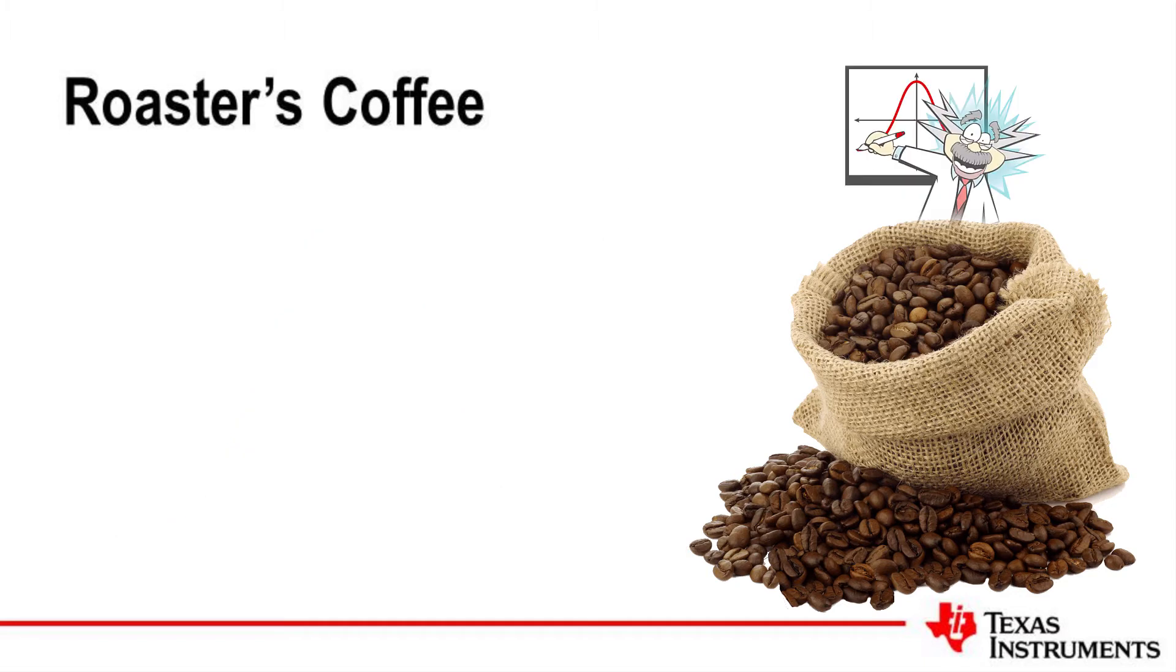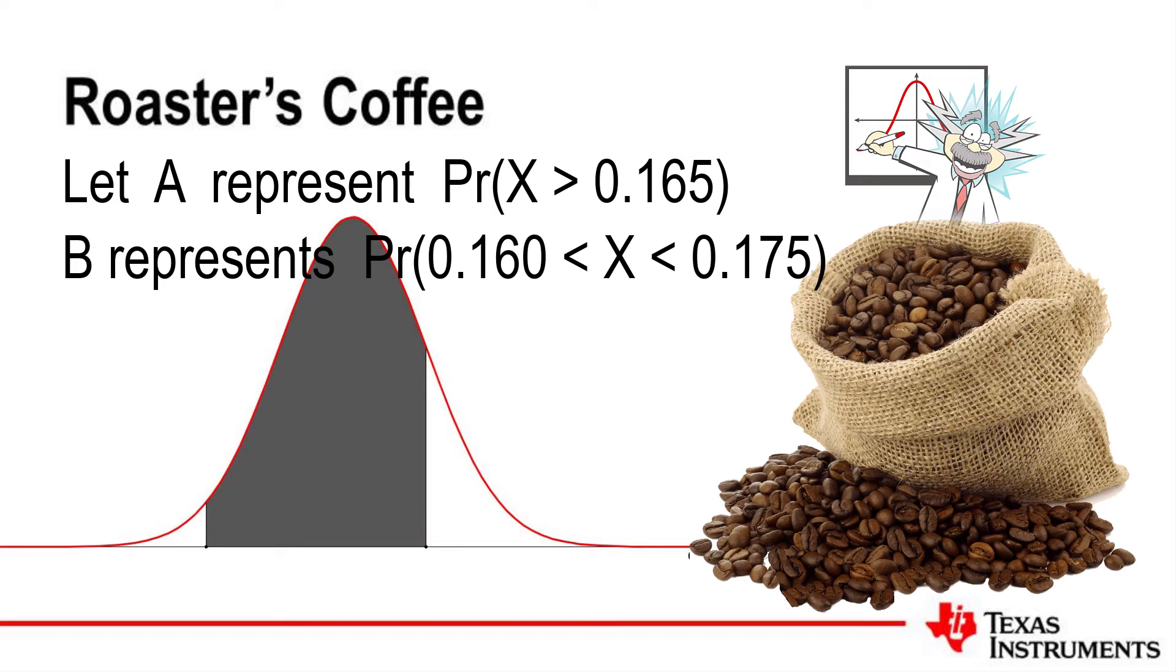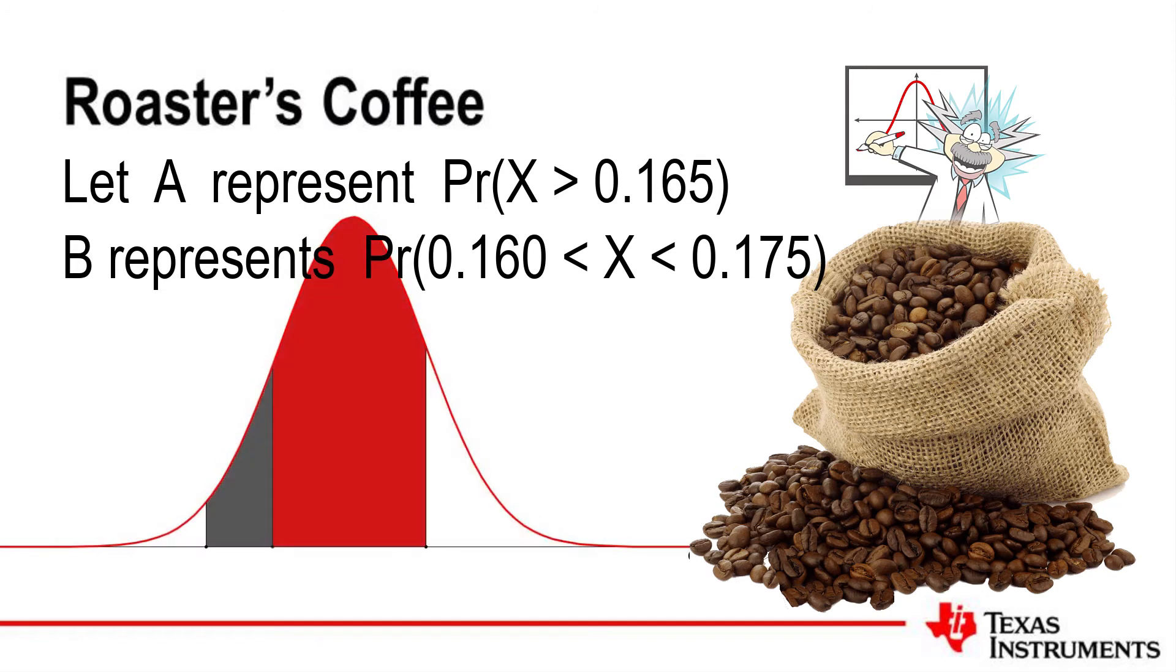To solve this problem, I will start by letting A represent the probability of a bean weighing more than 0.165 grams. B will represent the probability that a bean weighs between 0.16 and 0.175 grams. The first part of our solution is therefore looking for the probability of A given B. That is to say, selecting a bean weighing more than 0.165 grams from our testing bags.